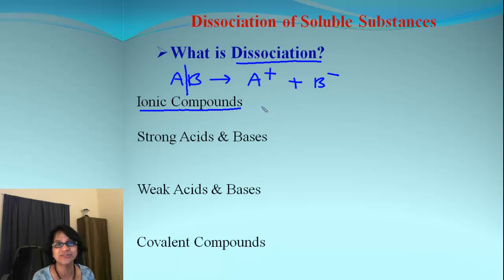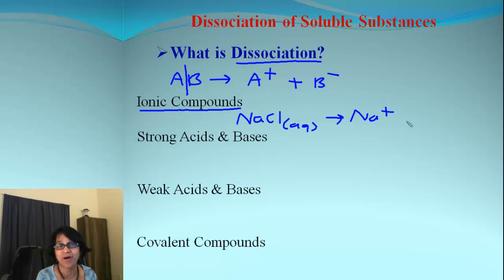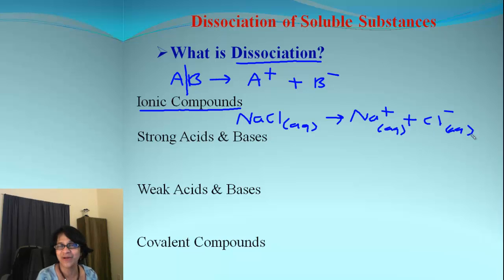All ionic compounds will dissociate when they are soluble — when they are in solution. For example, if you have NaCl in aqueous form, it will dissociate as Na+ and Cl−, and we will get all of these in ionic form.